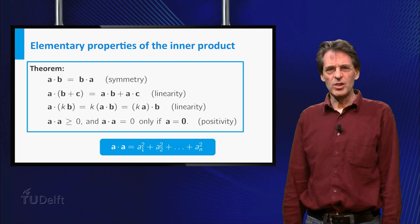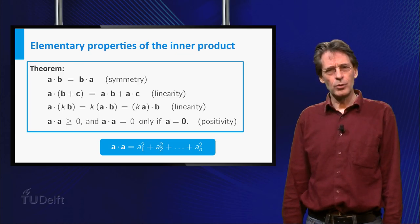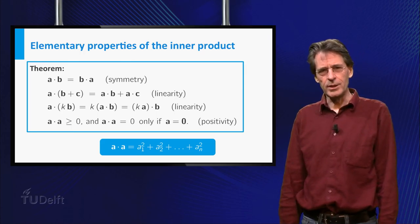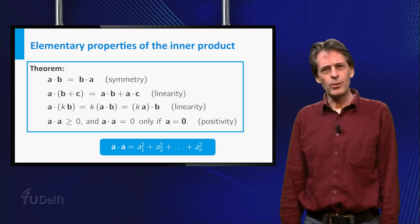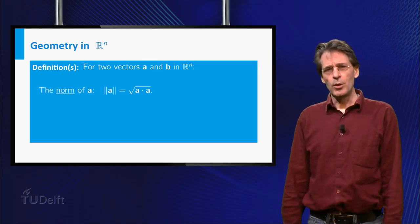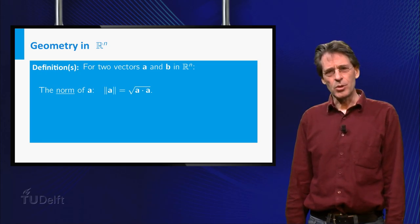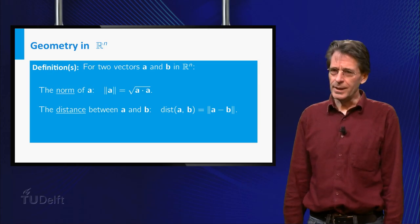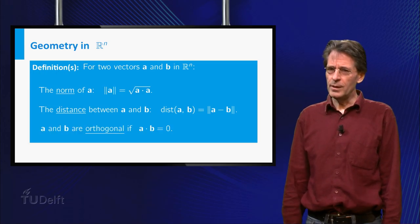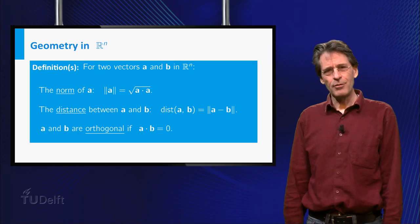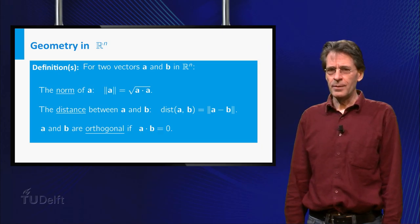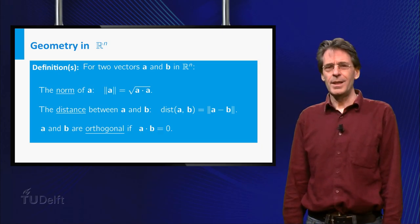Now we can define the notions length, distance and perpendicular in Rn analogous to the formulas that we saw in R2. Only mathematicians have decided to come up with new designations and introduce the terms norm and orthogonal. Well, fasten your seatbelt, here we go. The norm of a vector a is defined as the square root of a dot a. And the distance between two vectors is the norm of the vector a minus b. Thirdly, we say that two vectors a and b are orthogonal if their inner product equals zero. So the norm denotes the length of a vector in Rn and orthogonal is the word for perpendicular in this more abstract setting. I must confess that even teachers like me sometimes mix up the words.